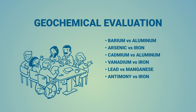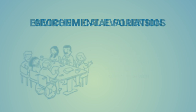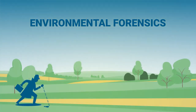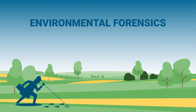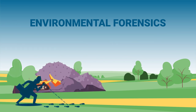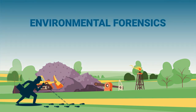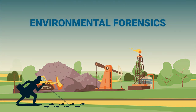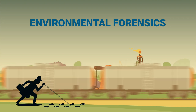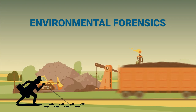Geochemical evaluation is based in part on selected elemental ratios and considers all available data and information. Similarly, environmental forensics techniques consider the chemistry of organic compounds to interpret potential sources of contamination at a site. Both methods consider scientific, operational, and historical information to interpret the potential sources.